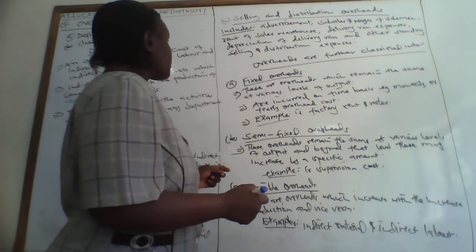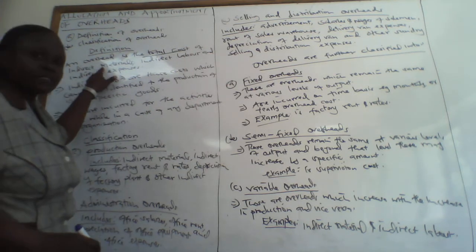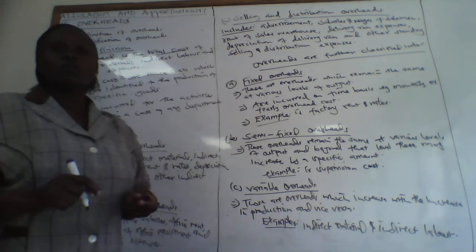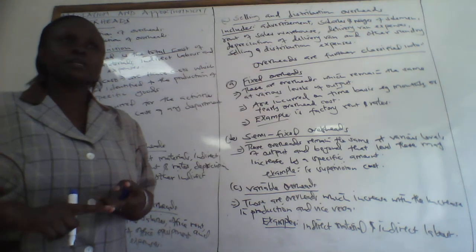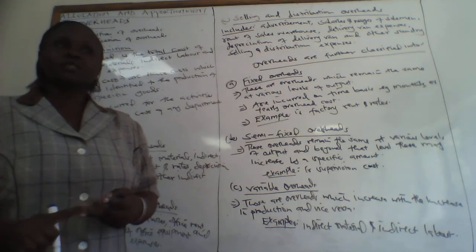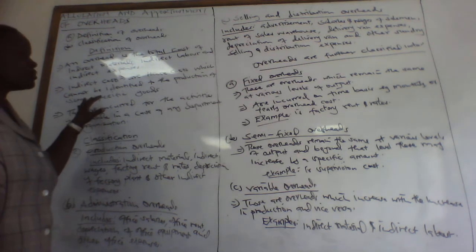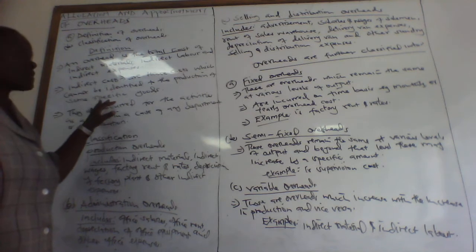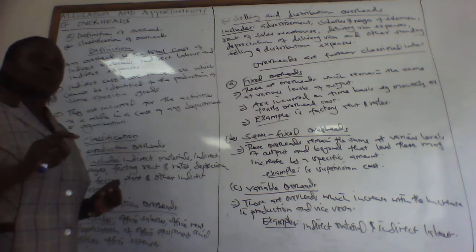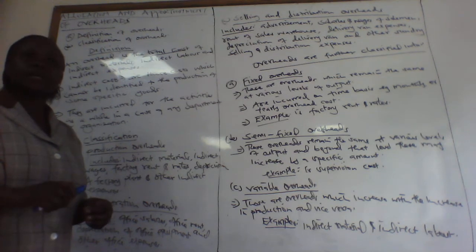An overhead is the total cost of indirect materials, indirect labor, and indirect expenses. When you add indirect labor, indirect materials, and indirect expenses, the total which you get, we call them overheads. When we say indirect costs, we mean those costs which cannot be identified to the production of specific goods.